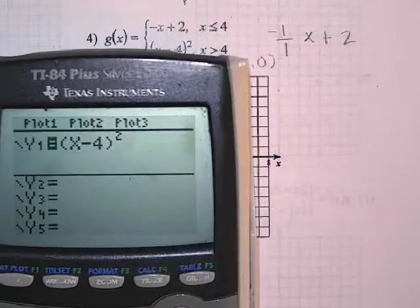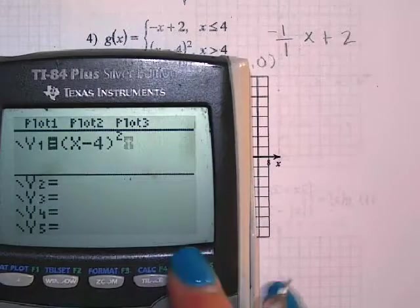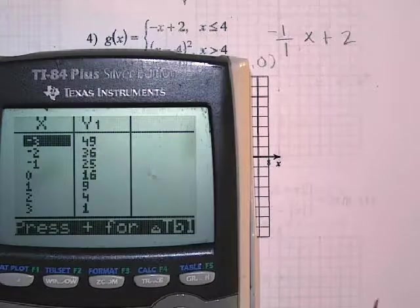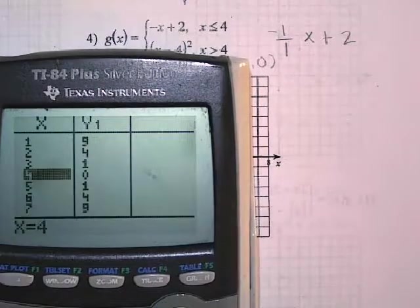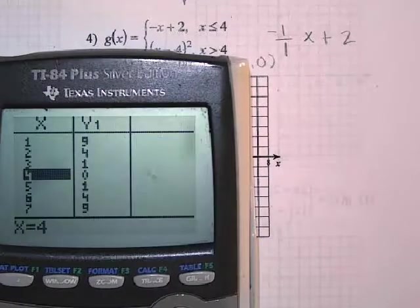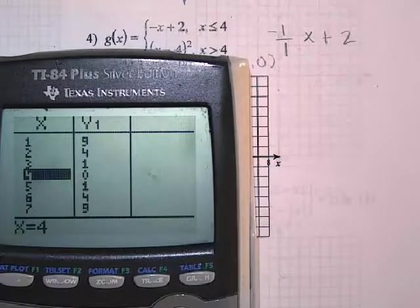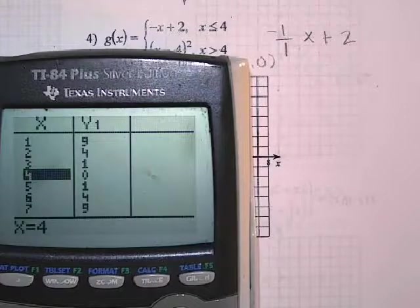And then when I graph this in my calculator, I'm going to hit second graph. And I'm going to look for the point four, zero. Why am I looking for the point four, zero? It's the middle. It's right in the middle of everything.